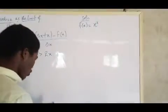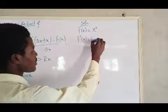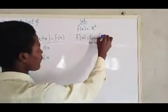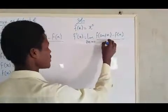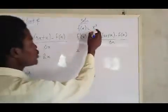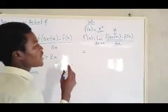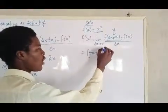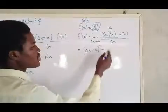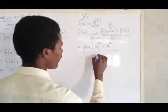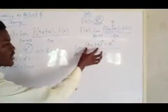So we have f of x equal to x squared, and we want to apply our formula. Don't forget our formula is: f prime of x equals the limit as delta x approaches zero of f of delta x plus x, minus f of x, all over delta x. Your x is standing as x, so f of delta x plus x means delta x plus x, all squared, because f of x is x squared.